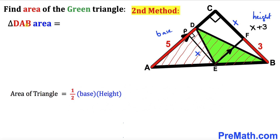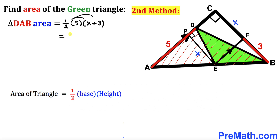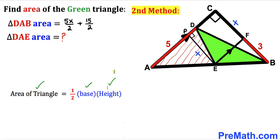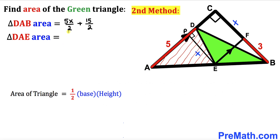To find the area of triangle DAB: base is AD = 5, and the height is BC = x + 3. So area of triangle DAB equals one-half times 5 times (x + 3), which distributes to 5x divided by 2 plus 15 divided by 2.